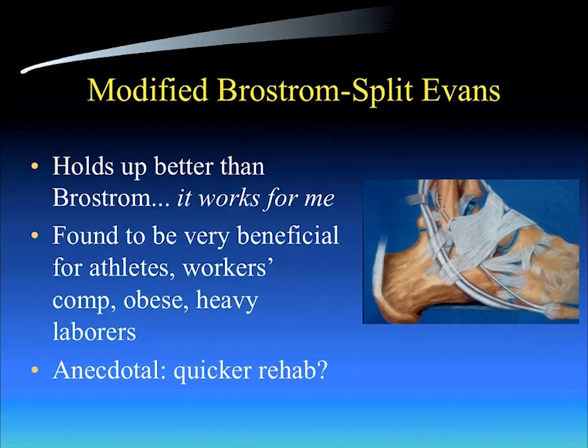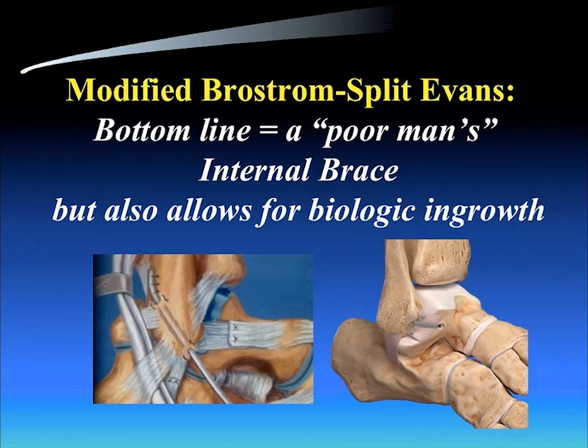Anecdotally, I find that adding the augmentation of the split peroneus brevis allows for quicker and more trusted rehabilitation as well. The bottom line is this is basically a poor man's internal brace. You may be familiar with that artificial ligament augmentation that has gained popularity recently — this is a very similar device, only it's the patient's own tissue, and it allows for biologic ingrowth as well. I look at this particular check rein device as very similar to the internal brace.